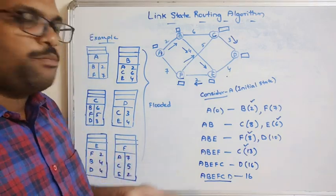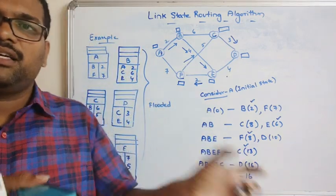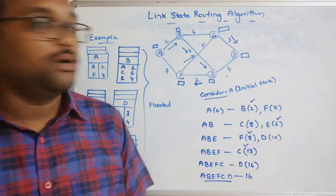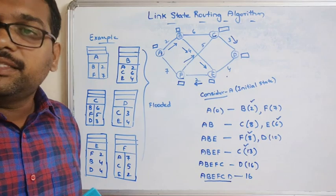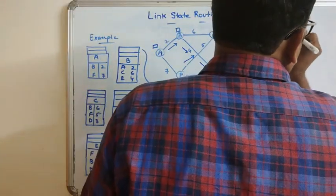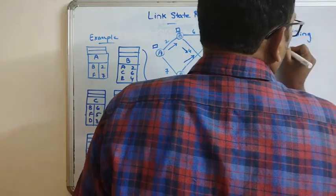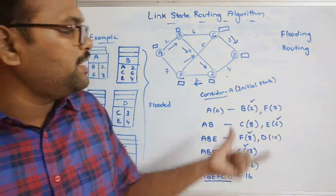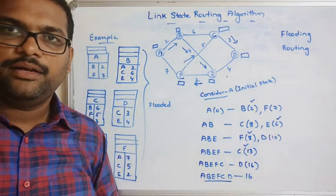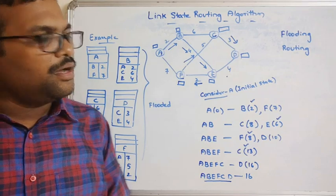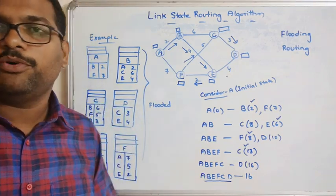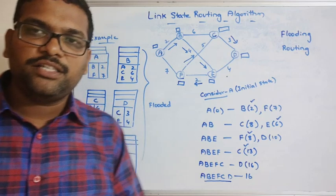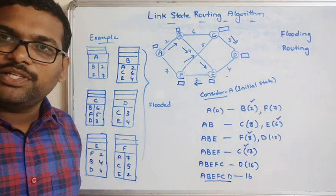The same process is explained in the Dijkstra's algorithm — a link for that will be posted in the description. This is how we implement the link state routing algorithm: two phases — flooding all the link state tables, and then every router follows Dijkstra's algorithm to find the shortest path. Hope you understood this. If you have any doubts regarding this link state routing algorithm, feel free to post in the comment section. If you enjoyed the session, like, share with your friends, and don't forget to subscribe. Thanks for watching!